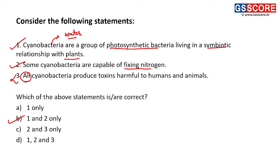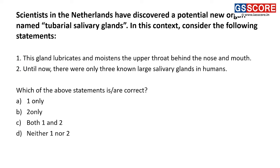Next question: scientists in the Netherlands have discovered a potential new organ named the tuberial salivary gland. Consider the following statements. First — this gland lubricates and moistens the upper throat behind the nose and mouth. This is correct because earlier we were aware of only three salivary glands, and this is the newly discovered fourth salivary gland. Second statement — until now, there were only three known large salivary glands in humans. This is also correct.